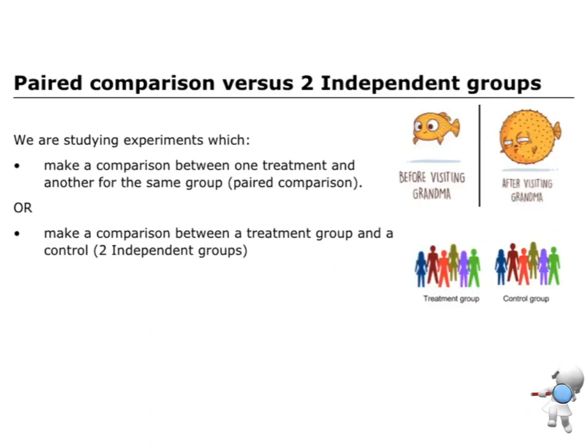Now the last bit is looking at there are two types of experimental design that we cover at level two. Level three only does the two independent groups. But level two, we can do either of these. Now it might be that your teacher just chooses one method or the other method. Some teachers will do both. That's up to the teacher to make that decision.